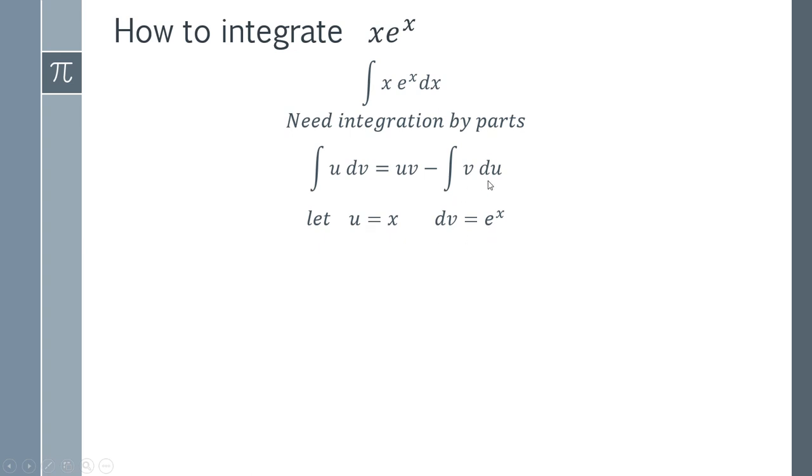Now in order to get our du, we're going to have to find the derivative of this. In order to get v, we're going to have to find the integral of both sides to get v equals. So we're going to do that on the next line. So we've got the derivative here, du giving us dx.